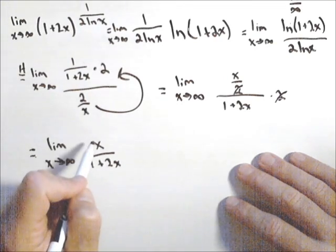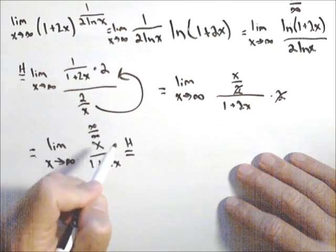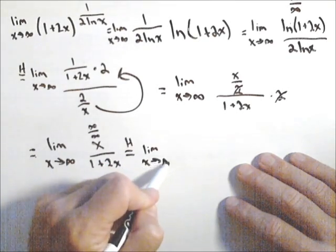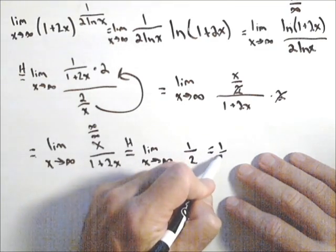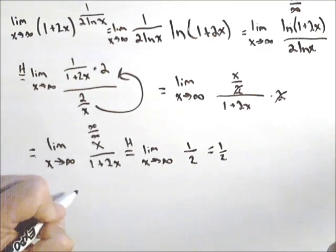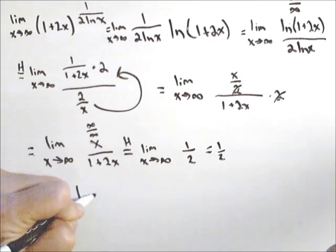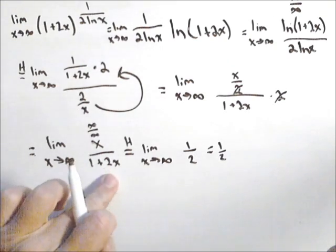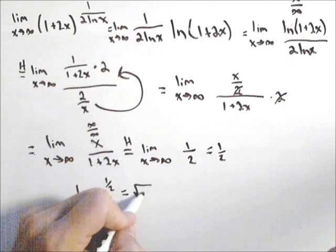So applying L'Hopital's rule one more time, I get the limit as x goes to infinity of one over two which is one half. Now remember this is not the limit. This is the natural log of the limit. So L equals e to the one half or the square root of e.